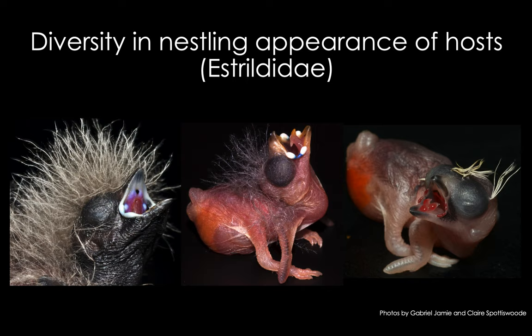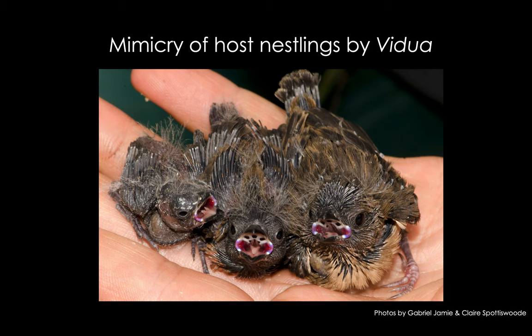The host family to the indigo birds, the estrildid finches, are quite unusual among birds in that, while the nestlings of most birds are dull and cryptically patterned, estrildid young boast arguably the most elaborate and diverse appearances of any bird in the world. Some have an almost otherworldly appearance, with luminous papillae lining the gape and complex combinations of spots and bars adorning the palate. Here you can see the young of a few species: a melba finch on the left, a red-billed firefinch in the centre, and a locust finch on the right — you can see how diverse they are.